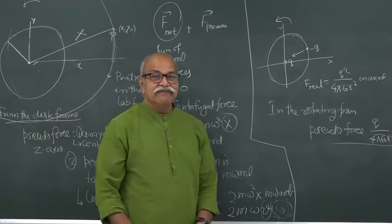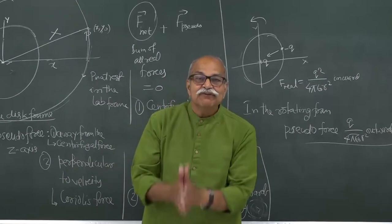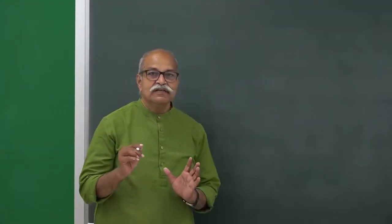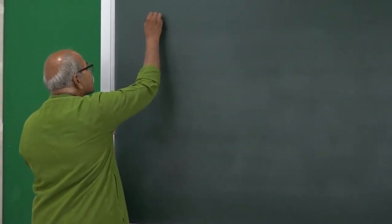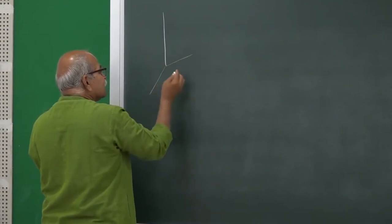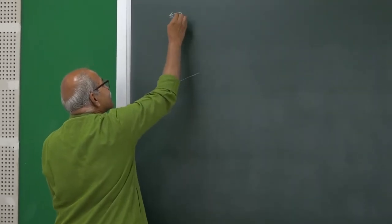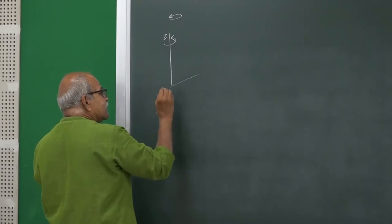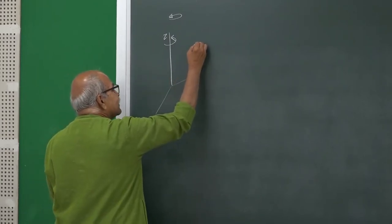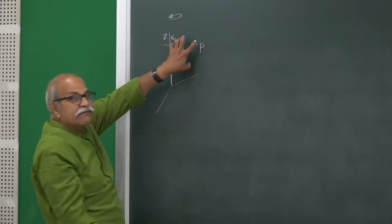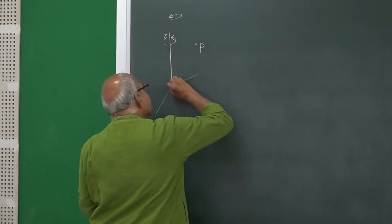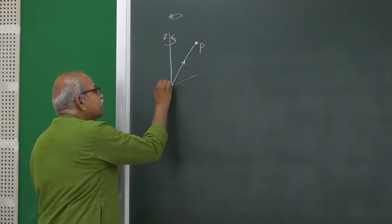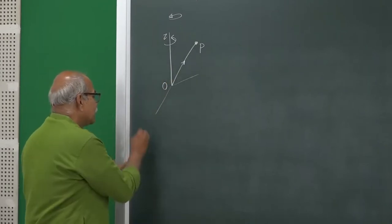Let me now derive a formal expression for centrifugal force and Coriolis force when a particle is in motion with respect to the rotating frame. Let us have a rotating frame — an axis system rotating in the lab with angular velocity omega, taking the z-axis as the axis of rotation. In this rotating frame there is a point P which is fixed in this frame, and I am looking at the vector OP.